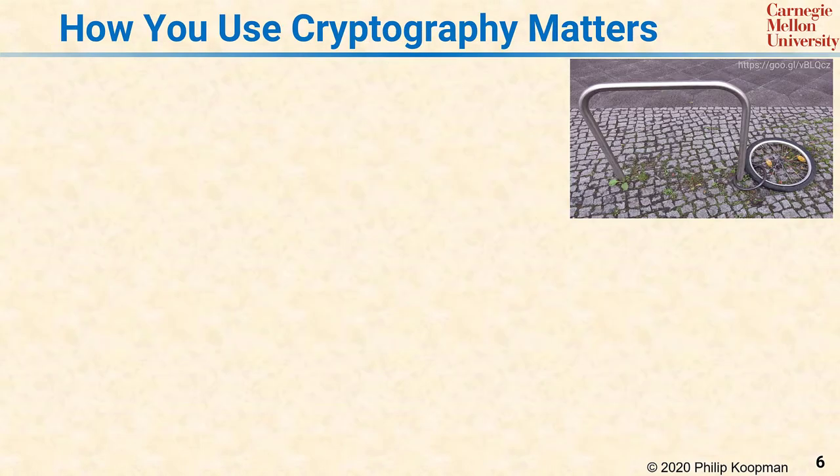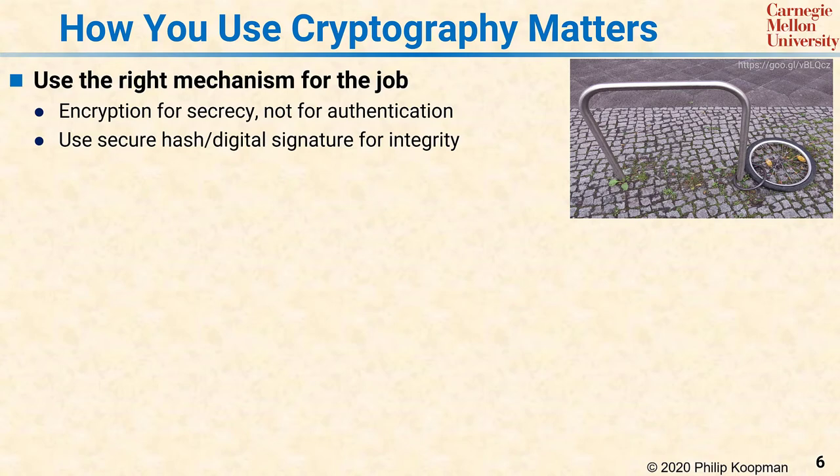Even if you use strong cryptography and strong keys, how you use cryptography also matters. First, use the right cryptographic mechanism for the job. In particular, encryption should be used for secrecy, not for authentication. Rather, authentication should be done via a secure hash or digital signature algorithm, which does not hide information but does provide tamper detection.